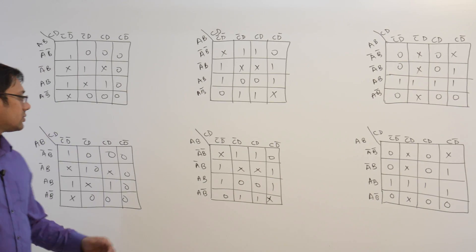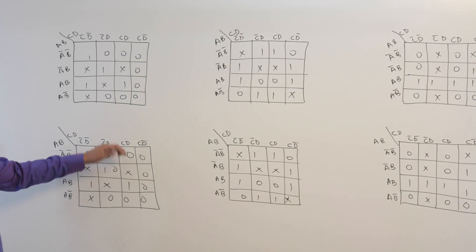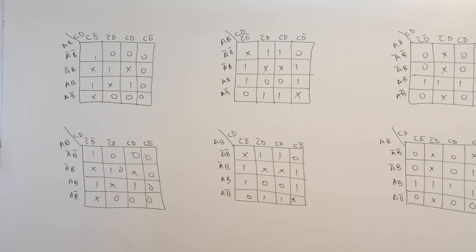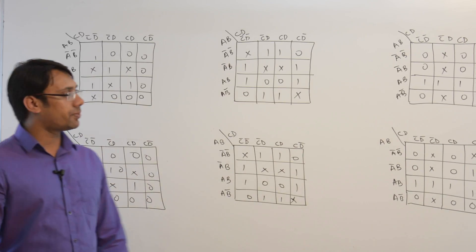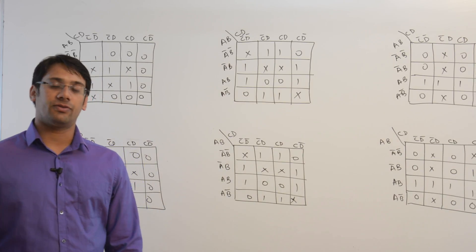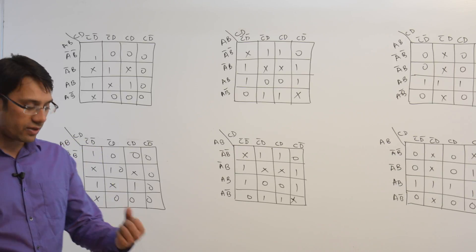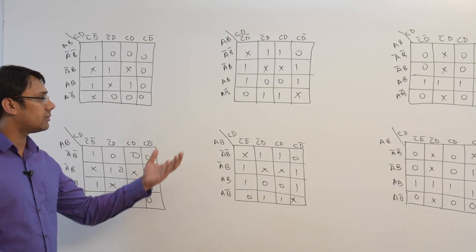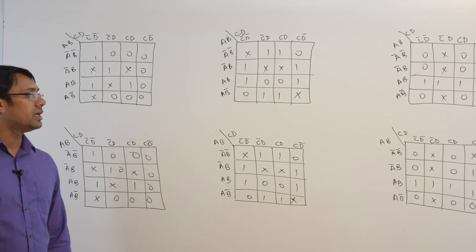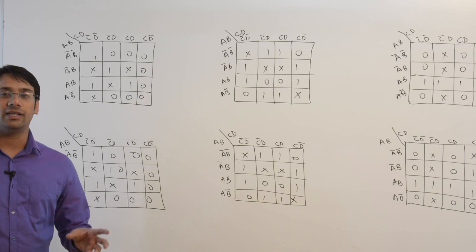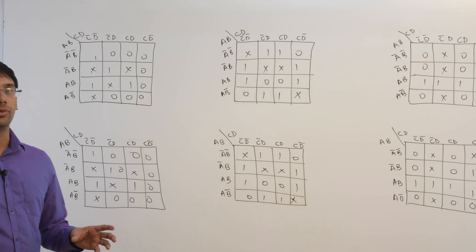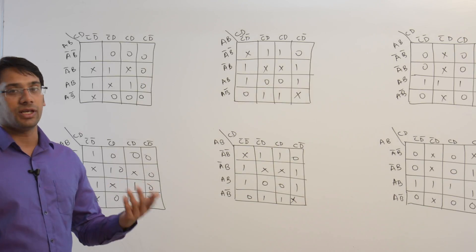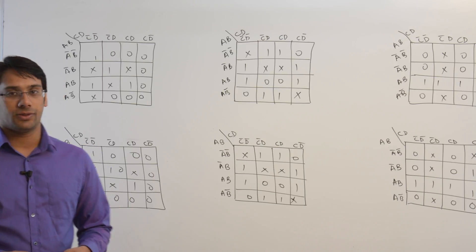Consider these K-maps. The bottom K-map is just a copy of the above one. We want to find the SOP and POS expressions for these K-maps. If you have a don't care combination, we can assign it with 1 as well as with 0 — we can assign them with any one of them according to our convenience.